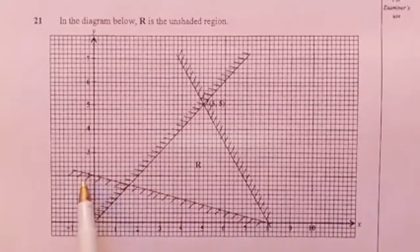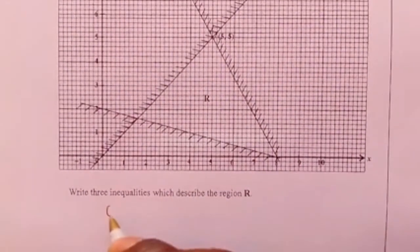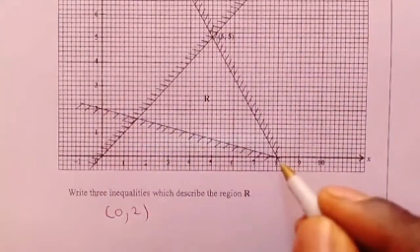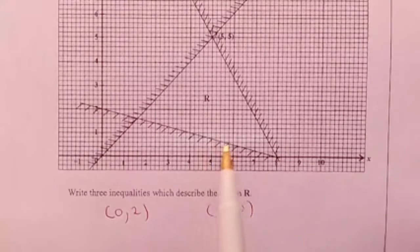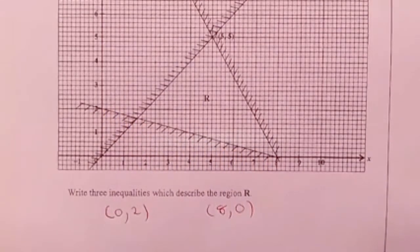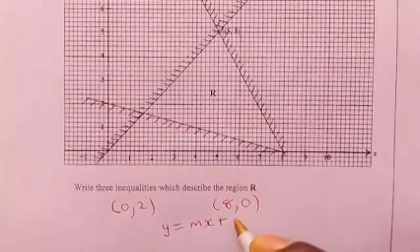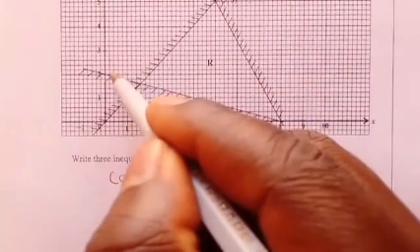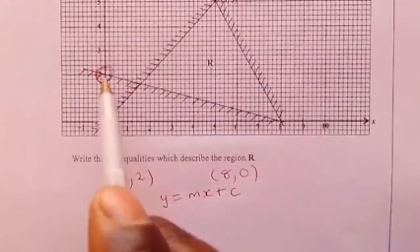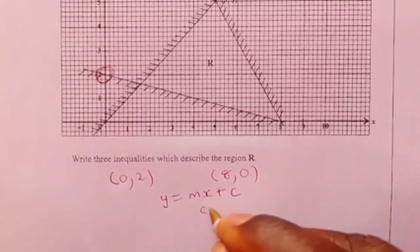This line is passing through the value of y at 2 and the value of x at 8. So let me write the points: (0, 2) and (8, 0). C is very easy to identify since the straight line is cutting the y-axis at y equals 2. The value on the y-axis being cut by the straight line is the y-intercept. It means that c is equal to 2.